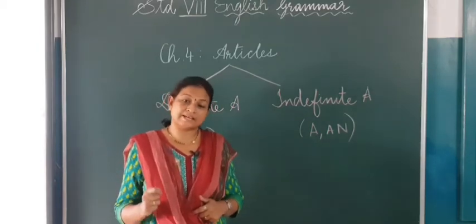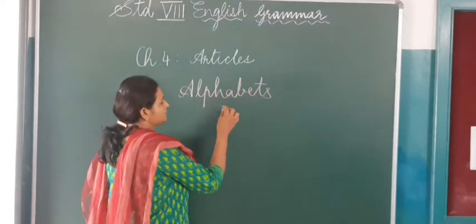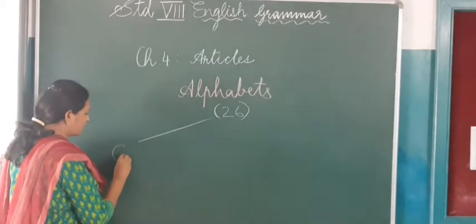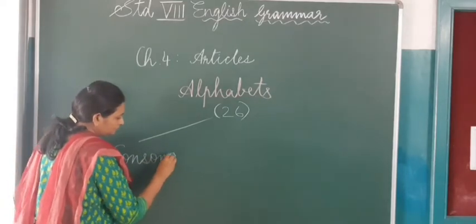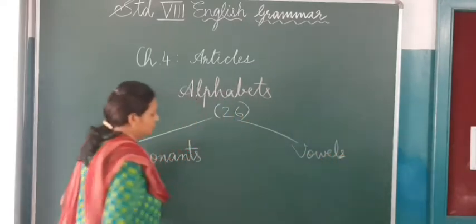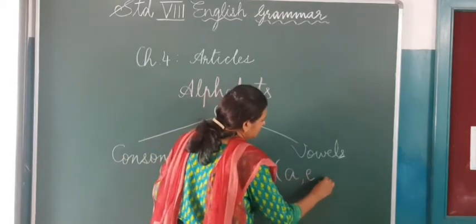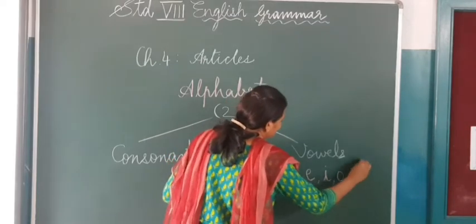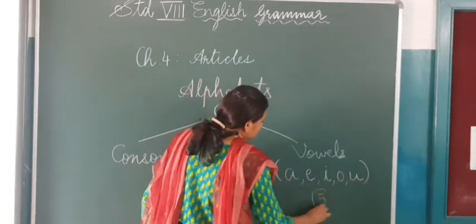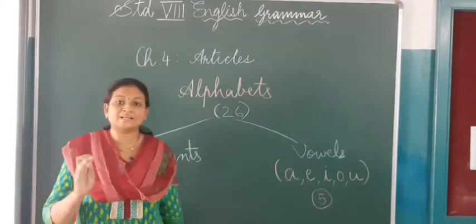Usually 'a' and 'an' — English comprises 26 alphabets. These alphabets are divided into consonants and vowels. Vowels are a, e, i, o, u. So how many vowels are there? Five. So 26 minus 5, that is 21. That means we have a total of 21 consonants.